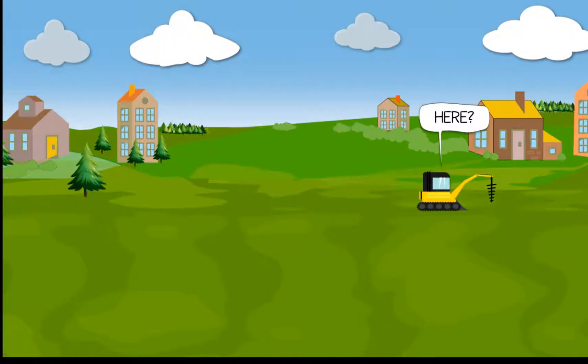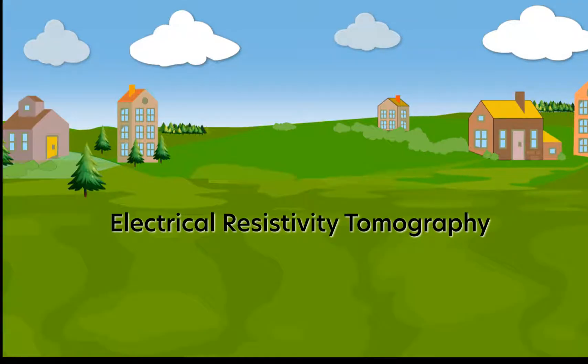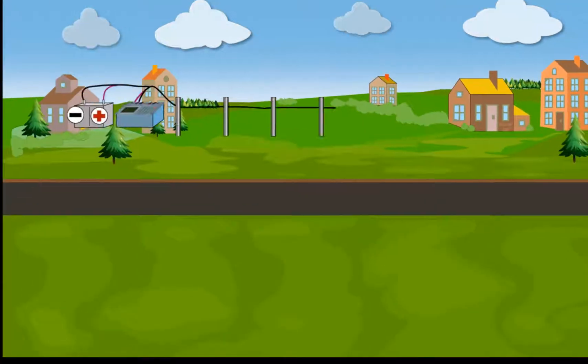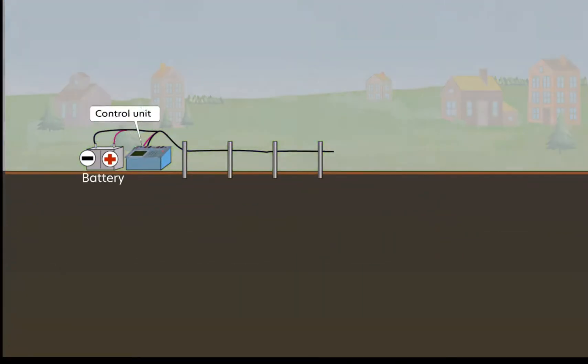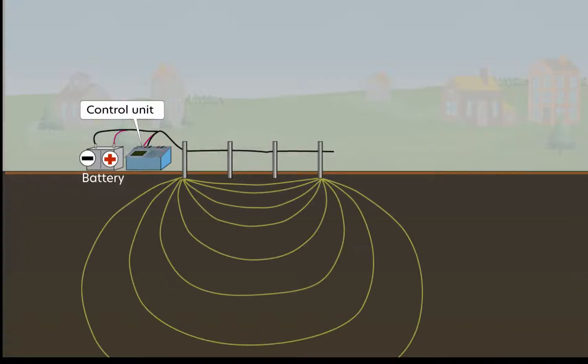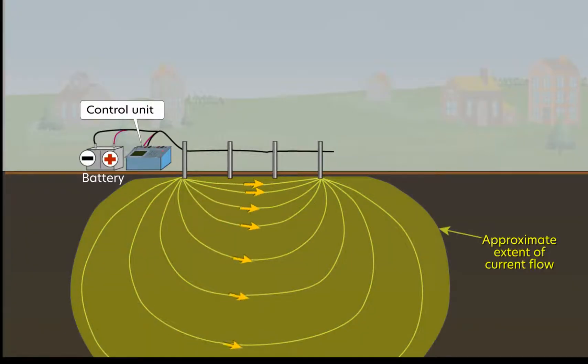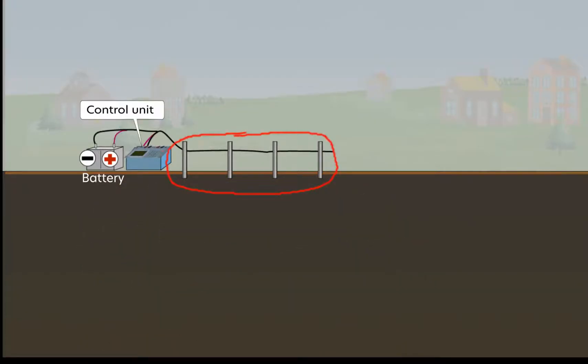One way is to use a geophysical method called electrical resistivity tomography, or ERT. In an ERT survey, geophysicists use an instrument that drives low-voltage electrical currents through the ground to measure how much resistance the current encounters. Every measurement requires four metal stakes pushed into the ground, called electrodes.